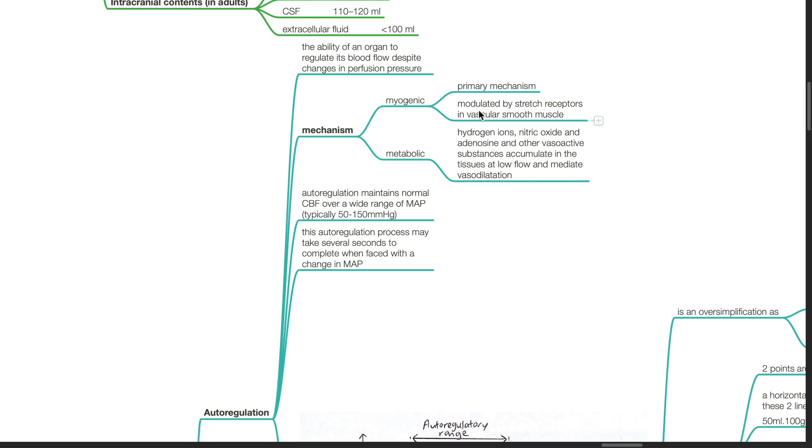Myogenic mechanism is the primary mechanism, where it is modulated by stretch receptors in vascular smooth muscles. The metabolic mechanism involves hydrogen ions, nitric oxide, adenosine, and other vasoactive substances which accumulate in tissues at low flow and they mediate vasodilation.